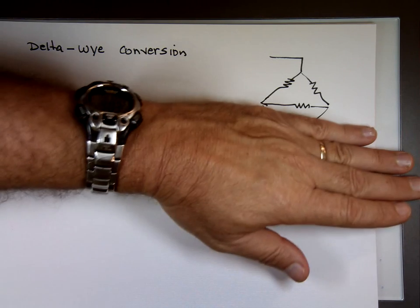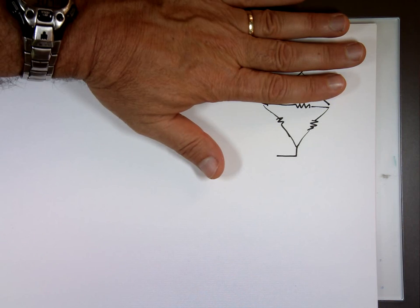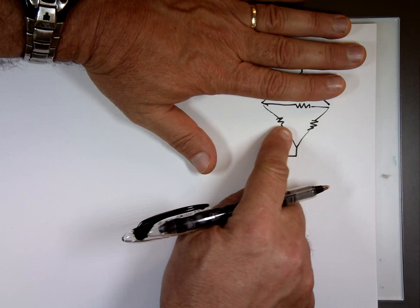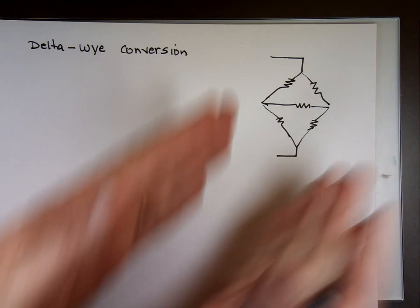Well, you can take this part here or you can take the bottom part here. See, that looks like what? Delta, triangle, and I can convert that to a Y connection.